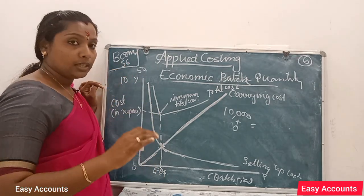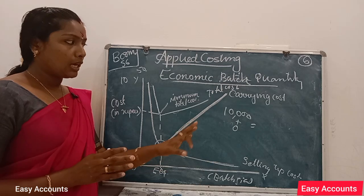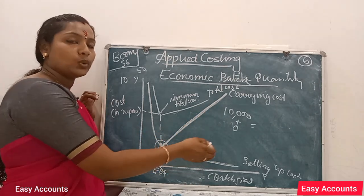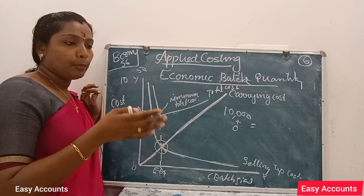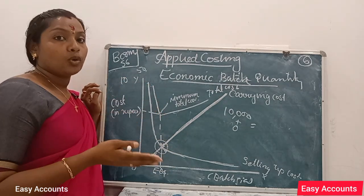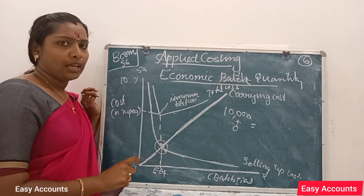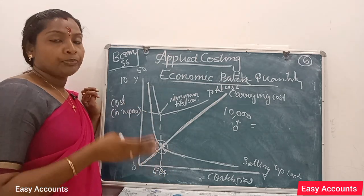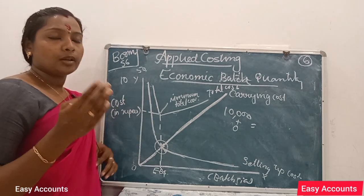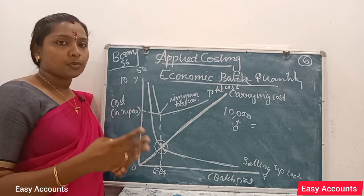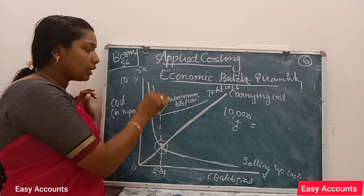We have to use the economic batch quantity to produce the maximum product at minimum cost. We need to consider these two costs: carrying cost and setting up cost. The batch size is important, and for each batch it will help us produce the product most efficiently.